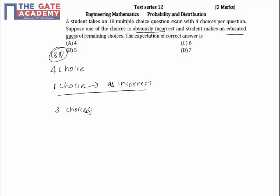So the remaining choices are 3. The correct answer is 1 among the 3, so the probability of choosing the correct answer is 1/3. The probability of choosing the wrong answer is 2/3.